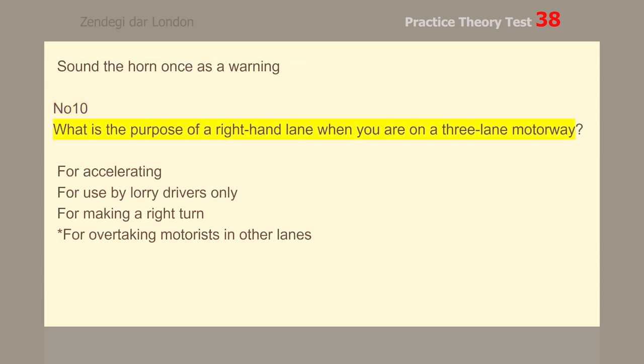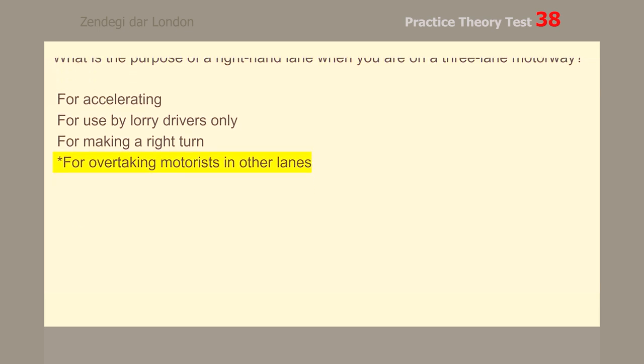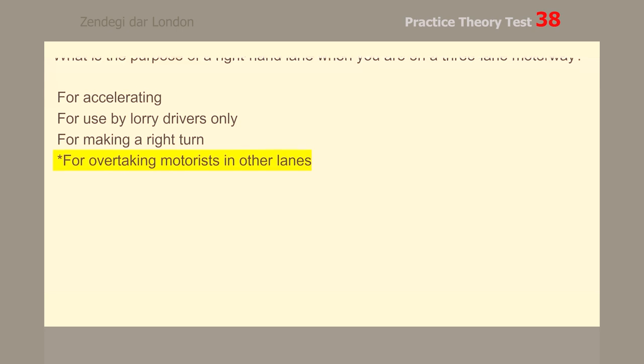Number 10. What is the purpose of a right-hand lane when you are on a three-lane motorway? For overtaking motorists in other lanes.